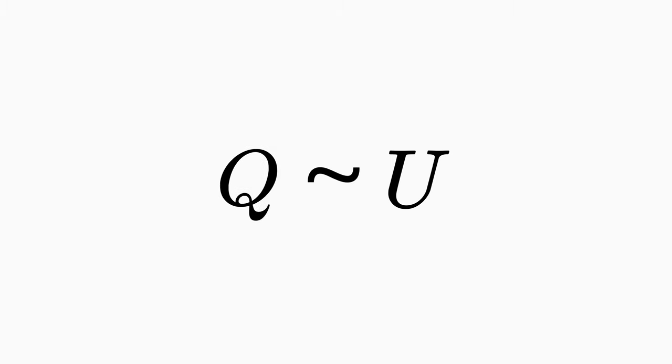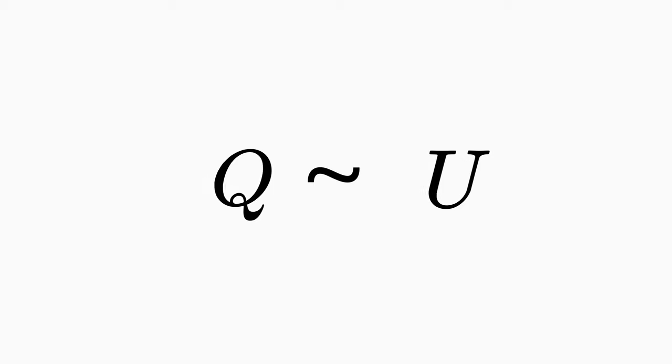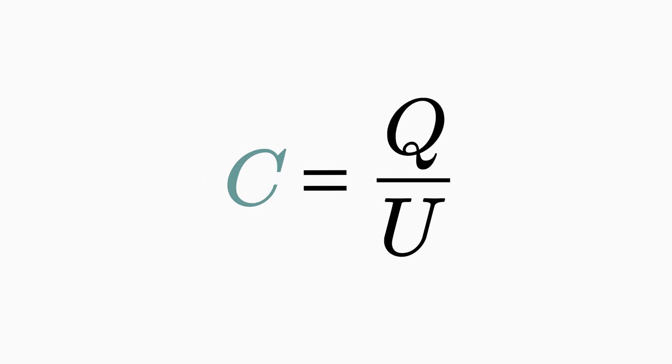Charge and voltage are proportional to each other, where the constant of proportionality C is the so-called capacitance. Its unit is Coulomb per volt, or Farad for short.